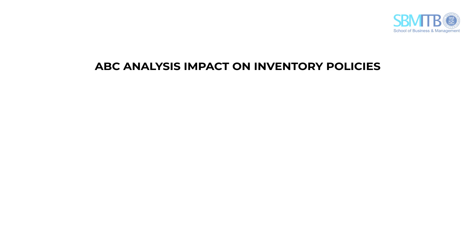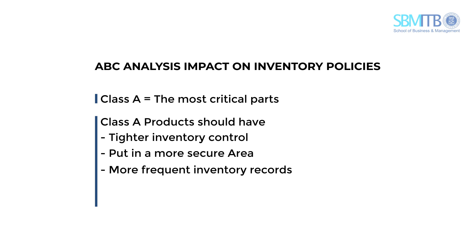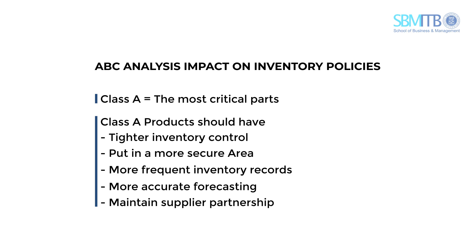Here is the complete table for Chico's ABC calculation. From the ABC analysis, we can establish inventory policies: products in class A should have tighter inventory control than products in class B or C. We can also place class A products in a more secure area and maintain more frequent inventory records. Forecasting for class A products should be more accurate than for other class categories.